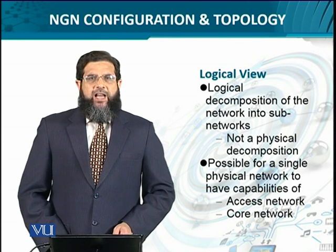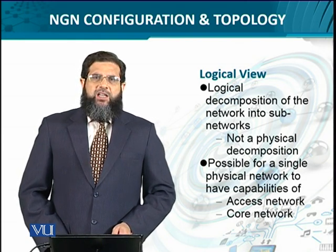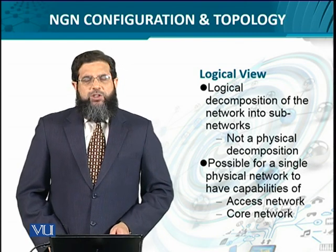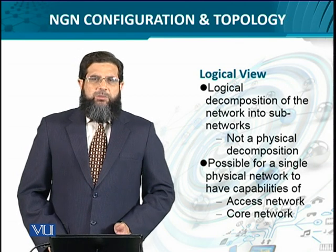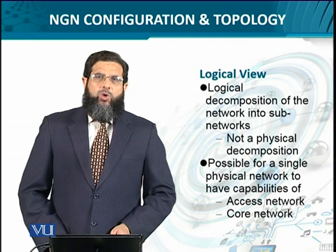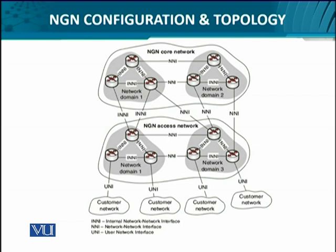It is possible at times that a single network can be orchestrated and tailored to serve both as a customer premises access network and the core network. So we are going to talk about the network division or decomposition in terms of the core network part, the access network part, and the customer premises or customer network.